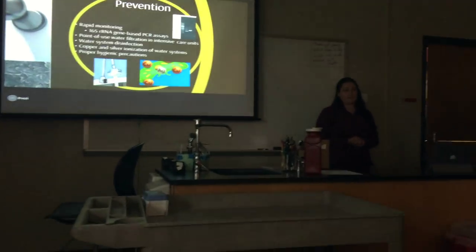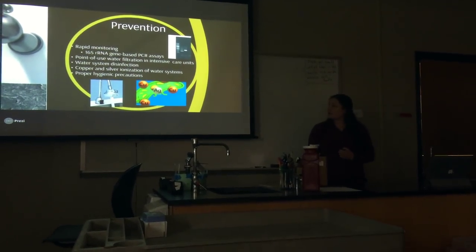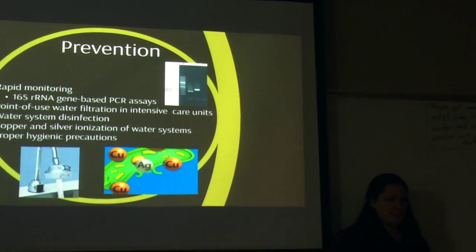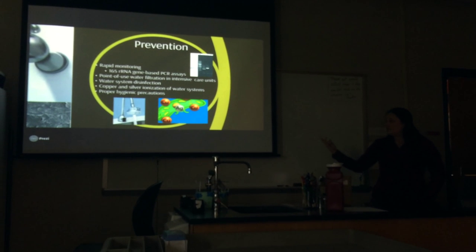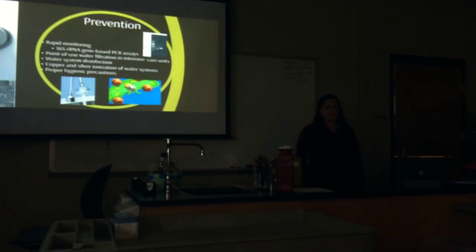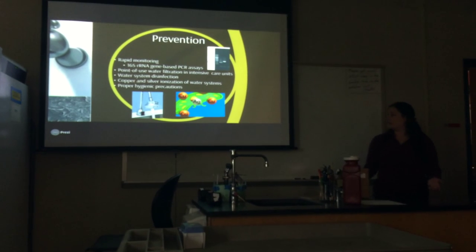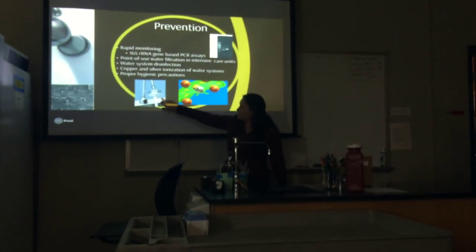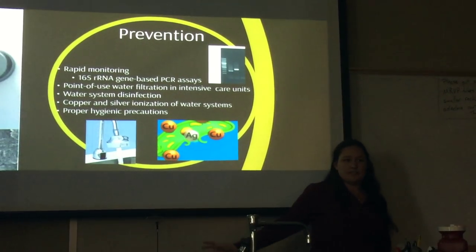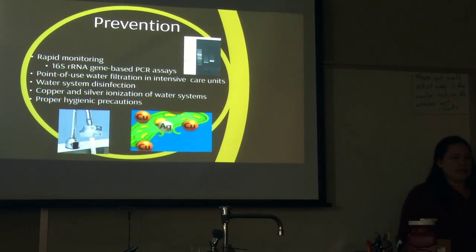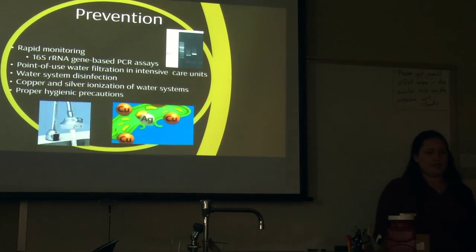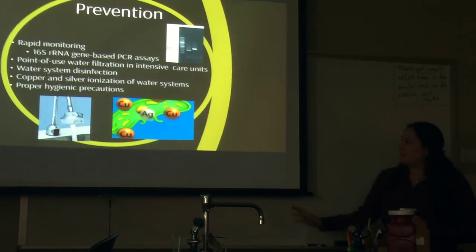One of the most effective and inexpensive methods for rapid detection is a 16S rRNA gene-based PCR assay — essentially a gel electrophoresis PCR to determine presence or absence of the organism. If it is found, point-of-use water filtration systems have been shown to be very effective. These are filters placed on the ends of taps that filter out the organism and other common waterborne pathogens in ICU settings, since healthy individuals generally don't need to worry about it.